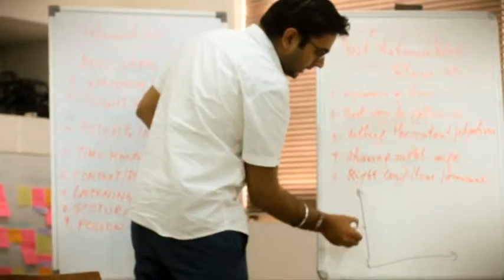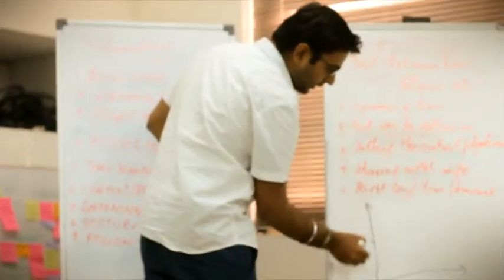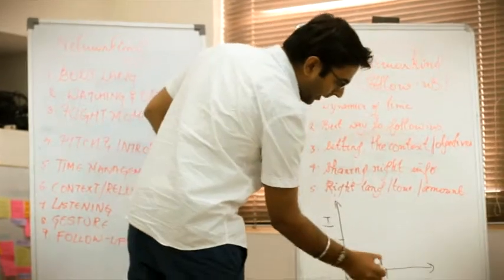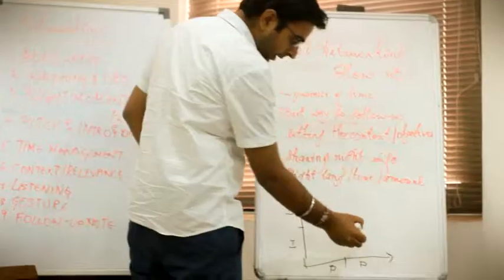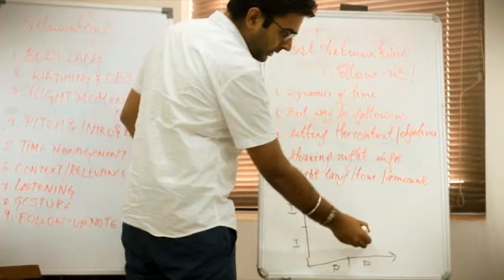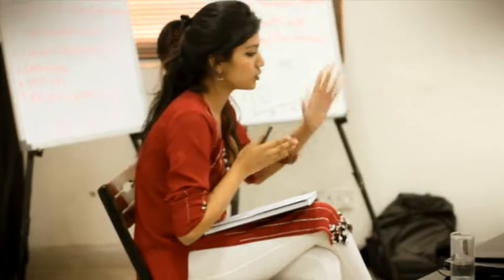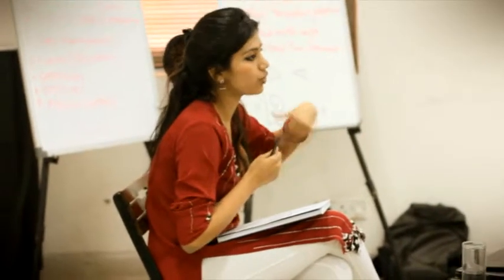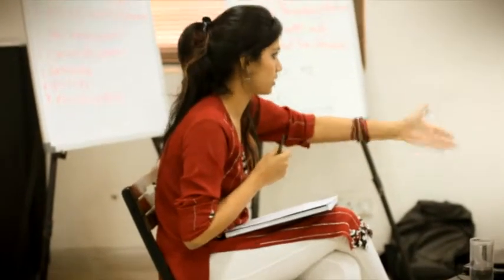What we will do in a stakeholder analysis is we will do it in a draft like this, where this is interest and this is power. High power, low interest. High power, high interest. Low power, low interest.